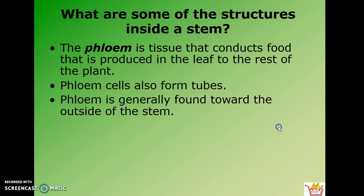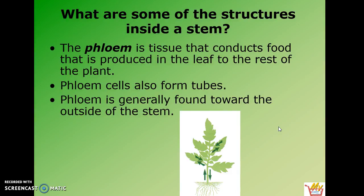The other term I need you to be familiar with is phloem. What it does: it transports food that's been made in the leaf through photosynthesis to the rest of the plant. Phloem cells can also form tubes, and it's generally found towards the outside of the stem. Notice the arrows show the phloem transporting food made in the leaves — because that's where photosynthesis occurs — down to the stem or even down to the roots to store later.